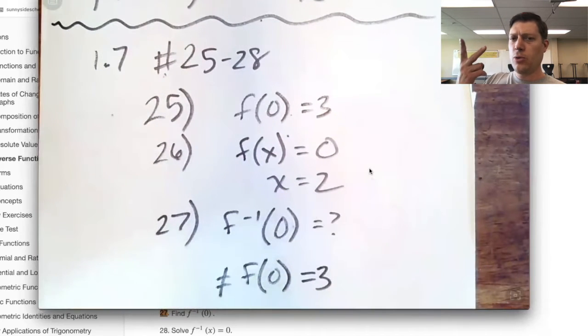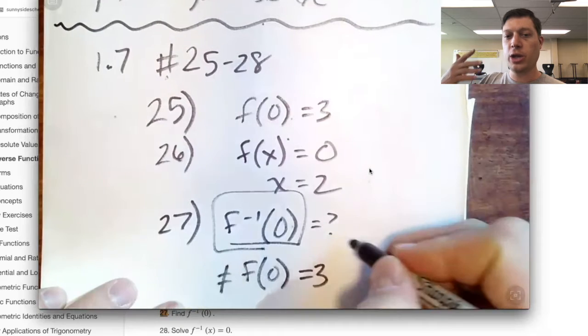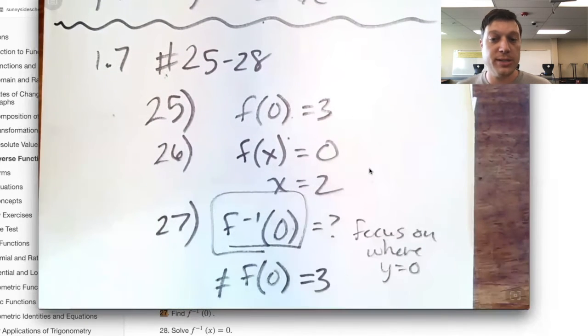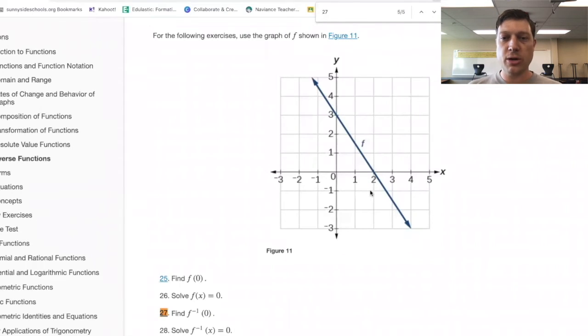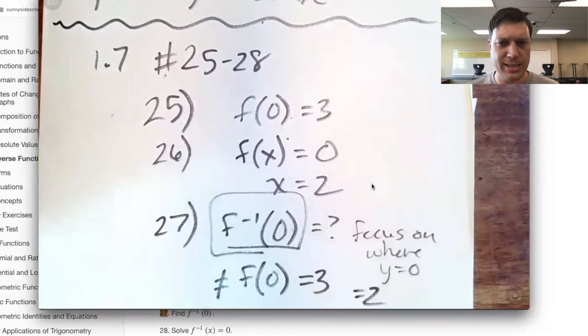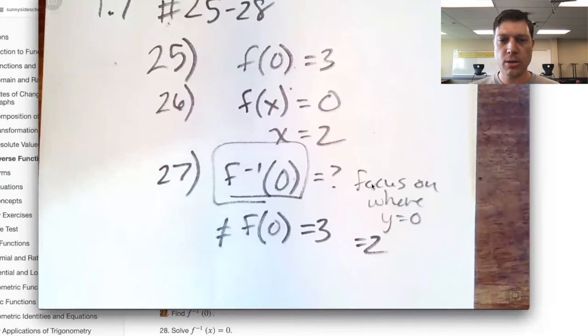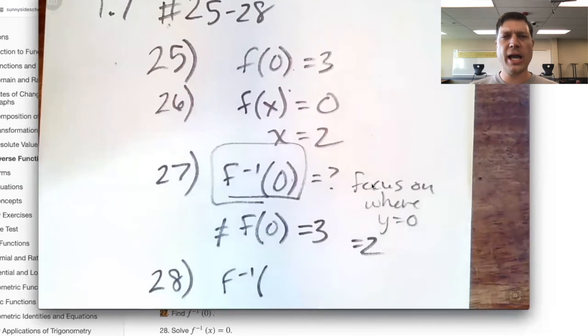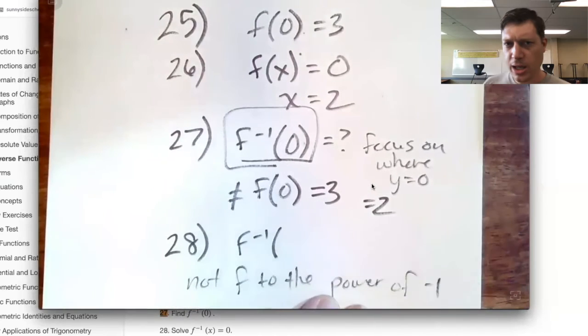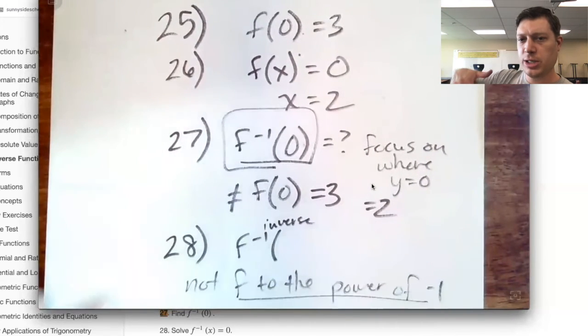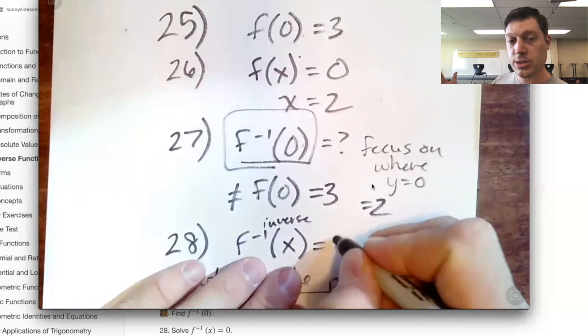When you flip them around, we're actually looking in reverse. f inverse of zero, f inverse of zero is saying, where is x zero? What's the y value? So we're saying when the y value is zero, what's x? That's two.